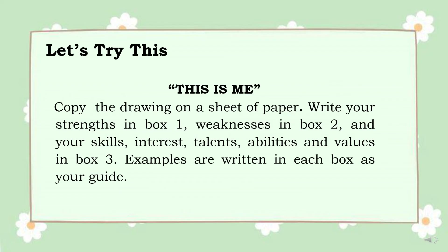For your Let's Try This activity, you are going to do the This Is Me activity. Copy the drawing on a sheet of paper. Write your strengths in box 1, weaknesses in box 2, and your skills, interest, talents, abilities, and values in box 3. Examples are written in each box as your guide.